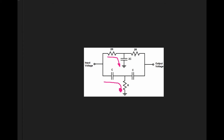And this capacitor is twice the capacitance of these two capacitors, which are equal. What that does is it creates a low pass filter and a high pass filter that overlap each other.